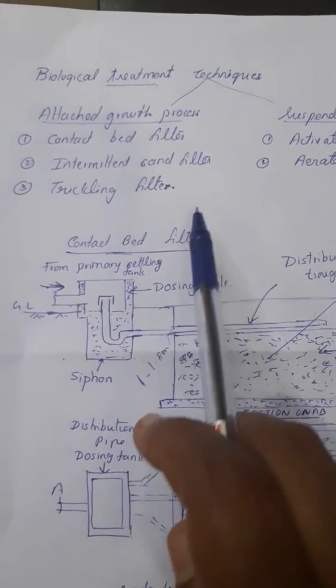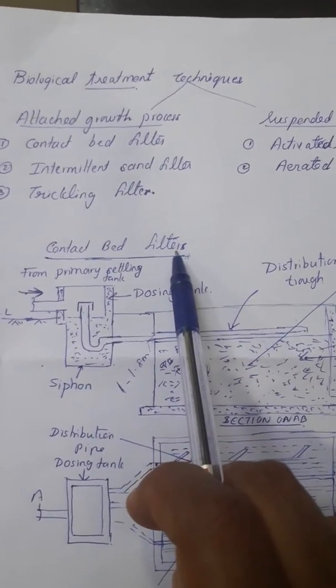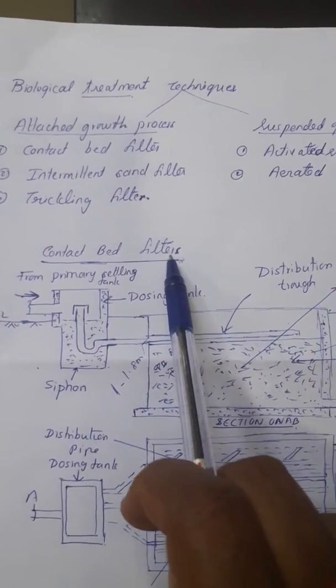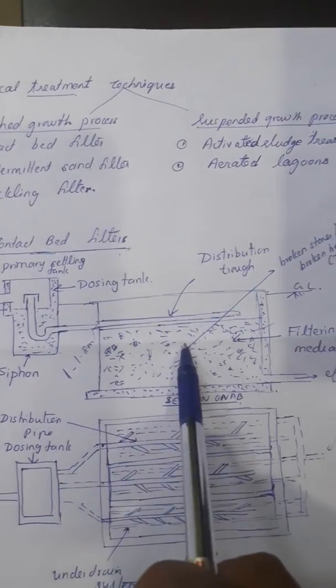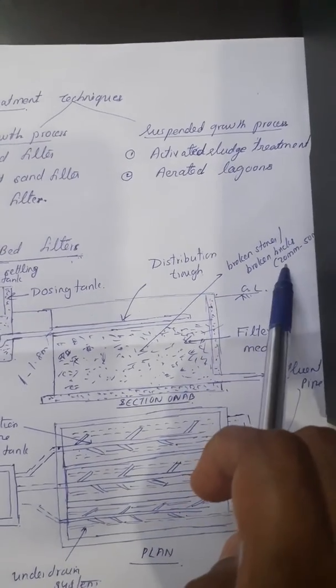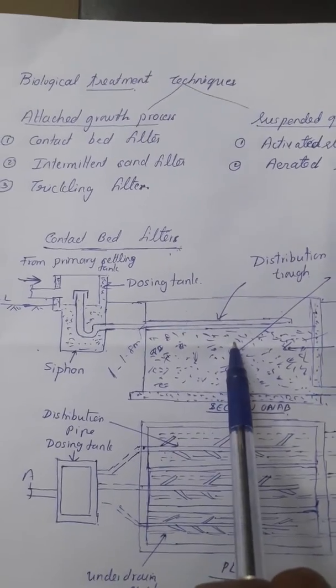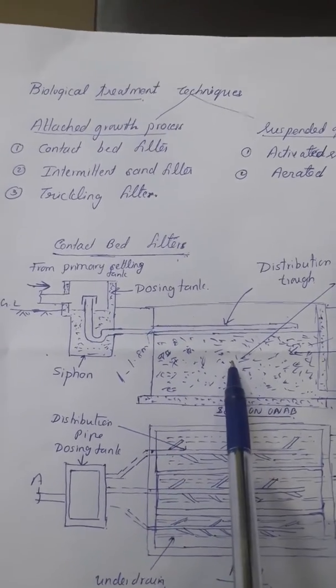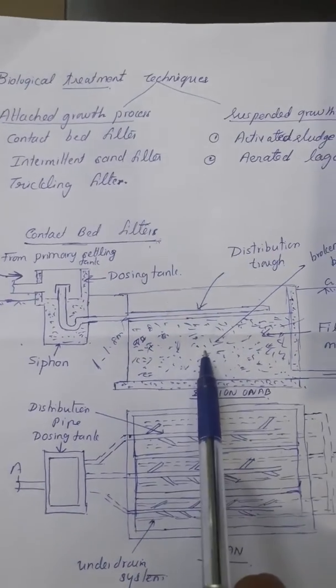Earlier we discussed the intermittent sand filter. This contact bed filter is similar to the intermittent sand filter in construction, except that in contact bed filter we are using broken stones or broken bricks of 20 mm to 50 mm size materials. Here we are using coarser materials compared to the finer materials used in intermittent sand filter.